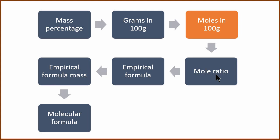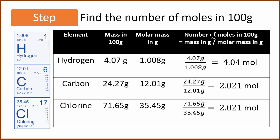The second step is, in 100 grams, how many moles are there? The whole idea is we want to find the mole ratio, because that is the empirical formula. In 100 grams, hydrogen has 4.07 grams. The second step is how many moles are there in 4.07 grams? For that, we need the atomic weight — the molar mass of hydrogen, which is 1.008. We take 4.07 grams and divide it by the molar mass to get the moles. In this case, there are 4.04 moles of hydrogen.